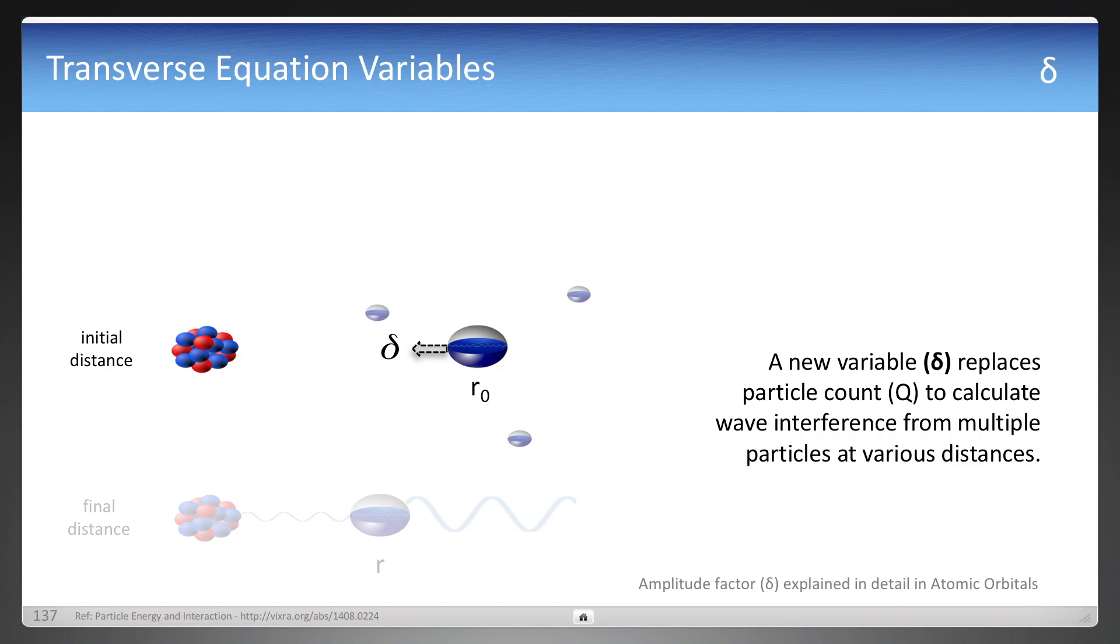A variable here called the amplitude factor, which is going to be explained in atomic orbitals, is used to calculate the wave interference on that one particle as an effect of everything else around it. Just makes it simpler.